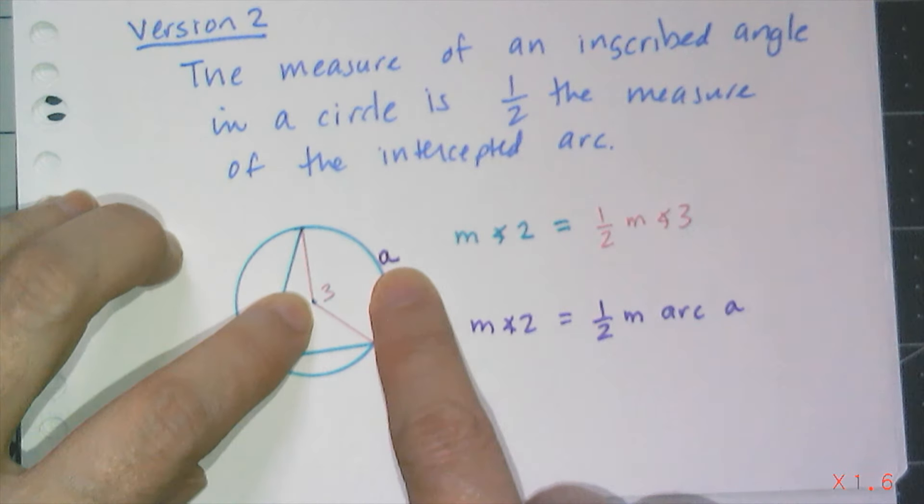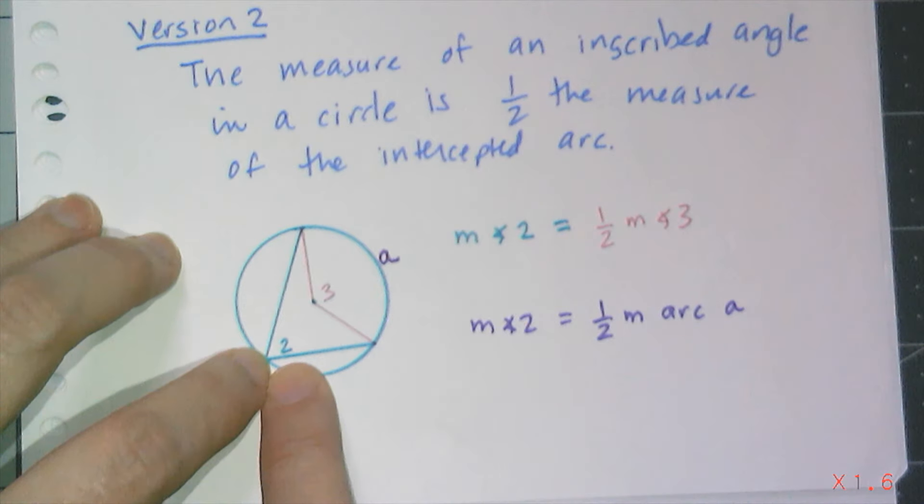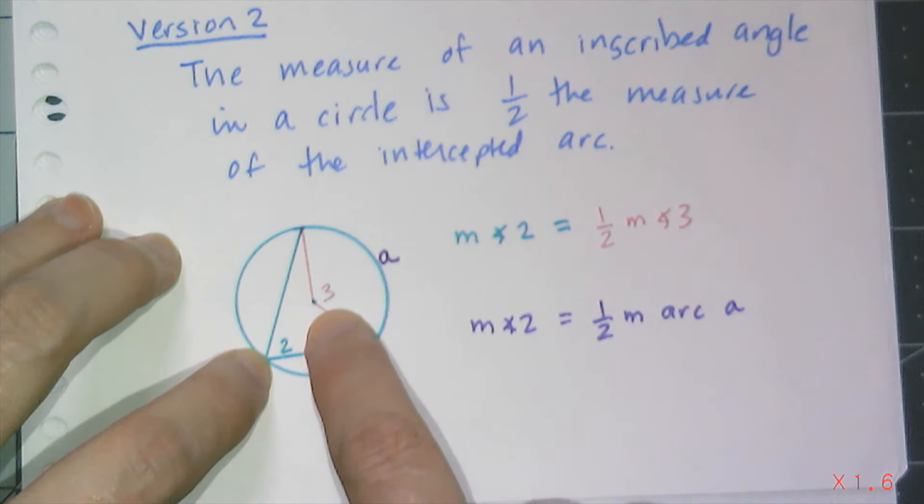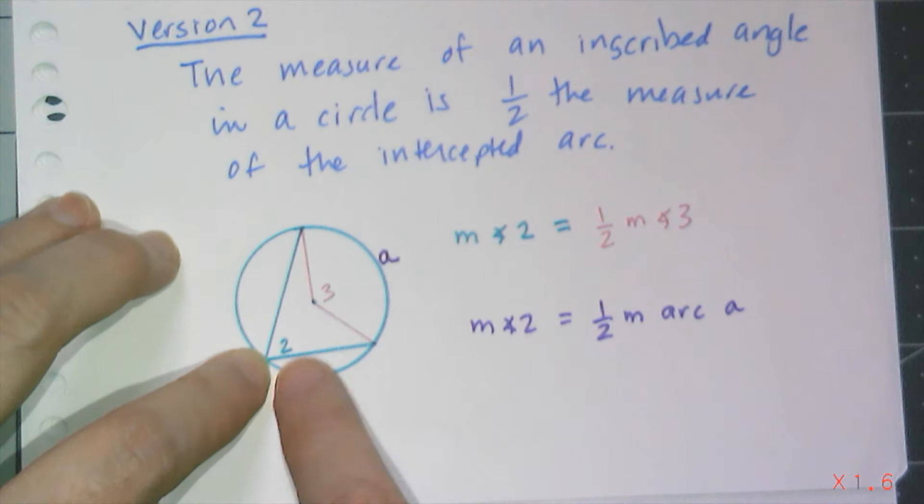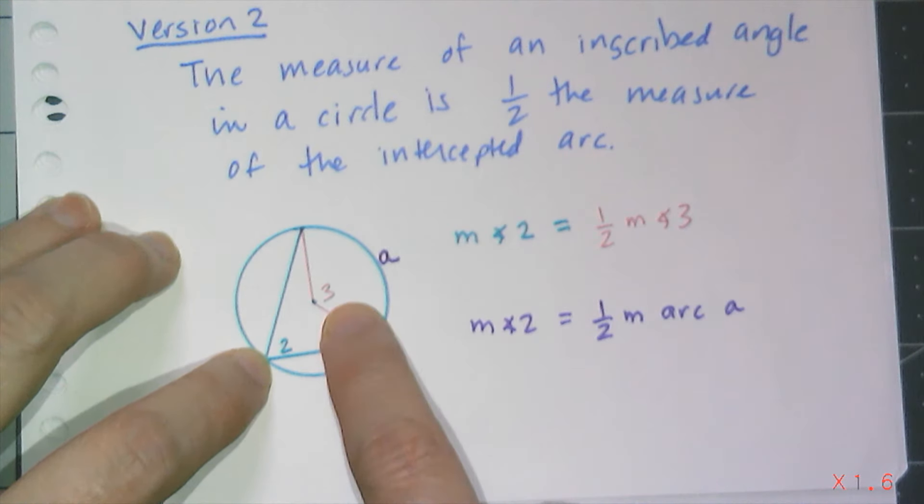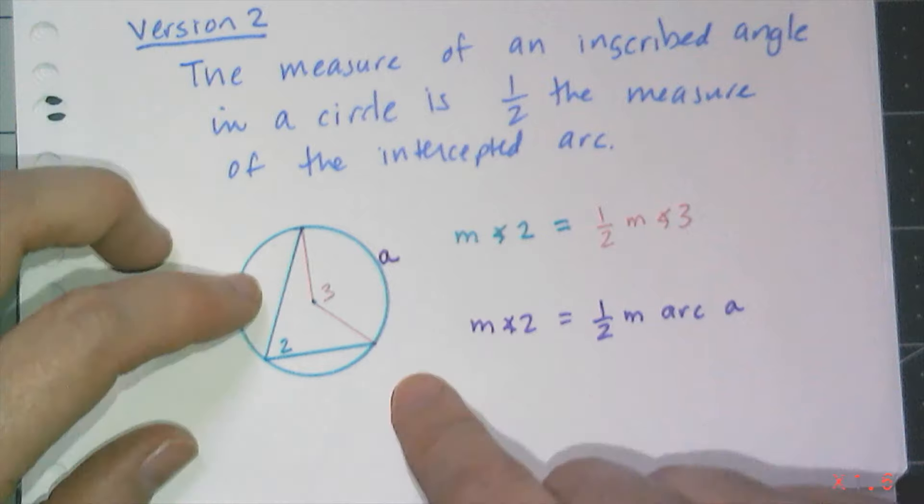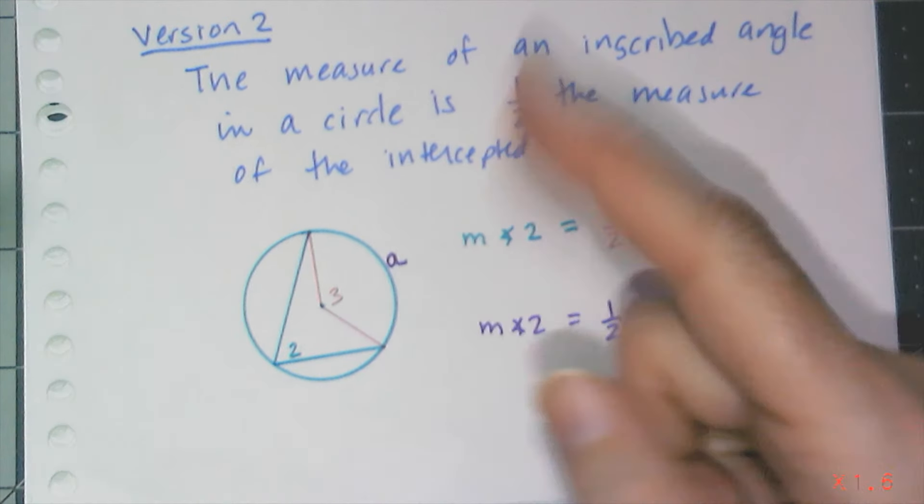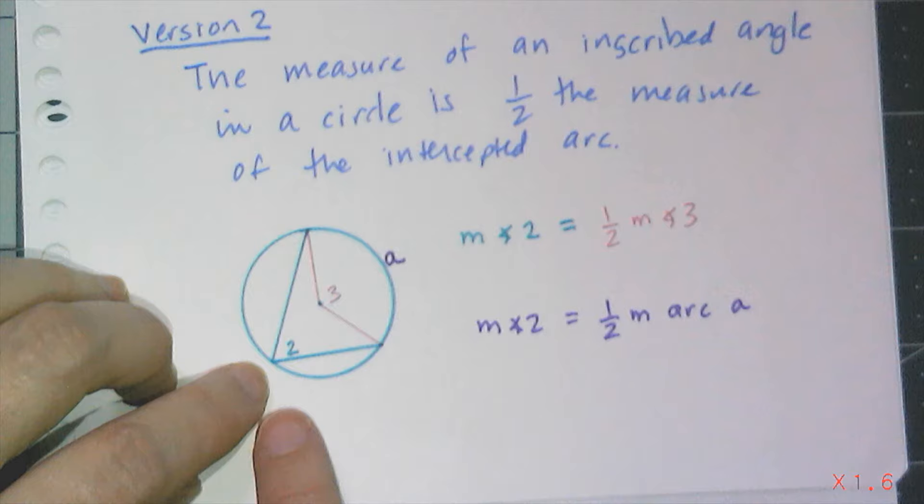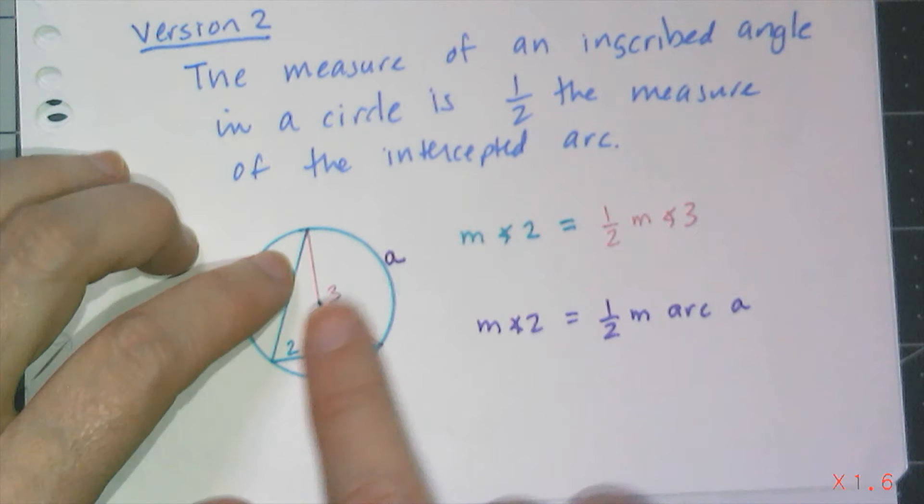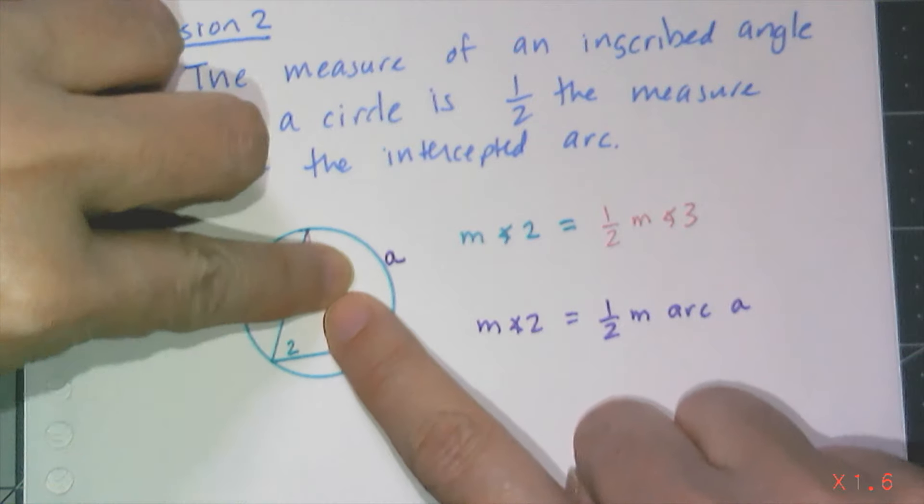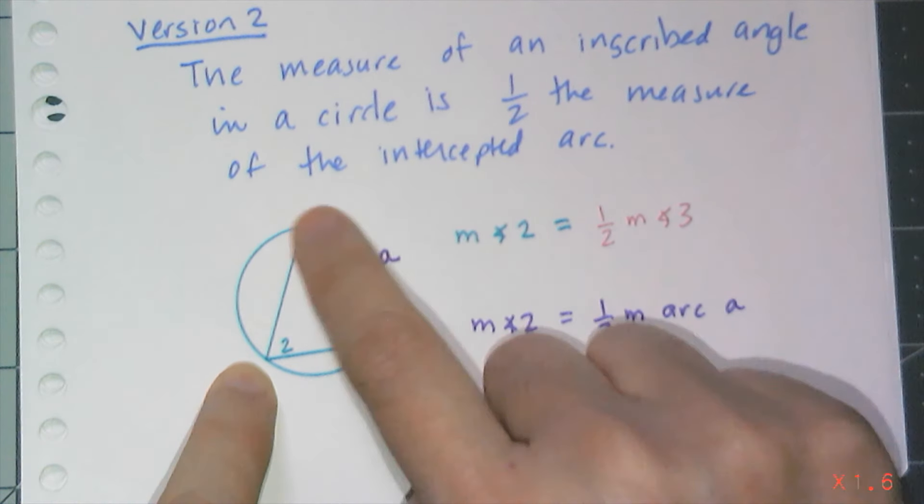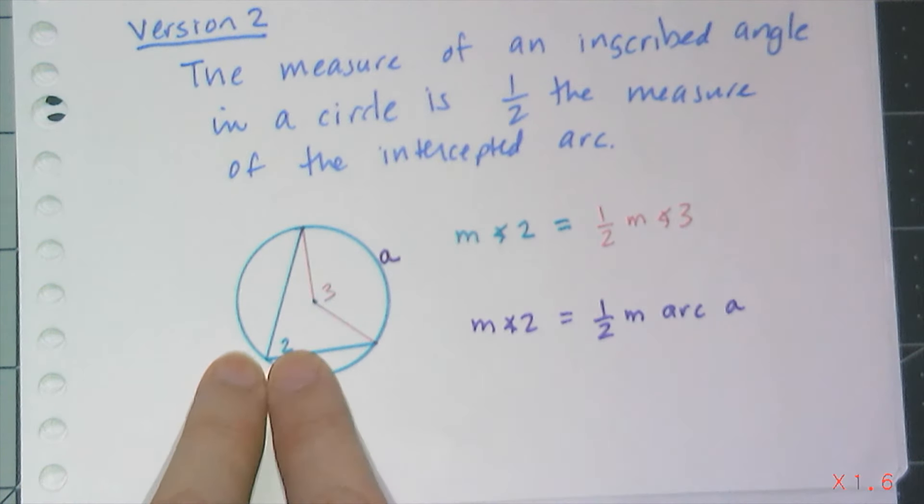And conjecture C61 says that angle two is one-half of the measure of angle three, right? That's version one, that this angle is half of the other one. And if you just kind of look at it, it looks right. Angle three is bigger than angle two. Now we use the definition of arc measure to say, well, let's ignore that central angle. If I just have the inscribed angle and that arc, then I know this angle is half the measure of that arc.